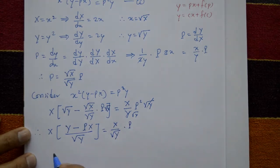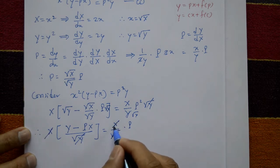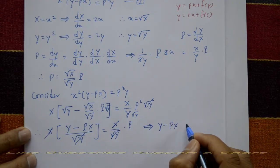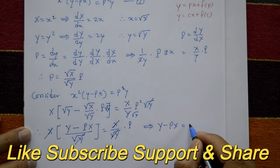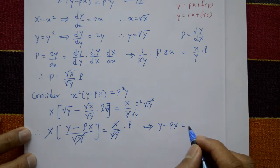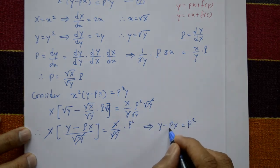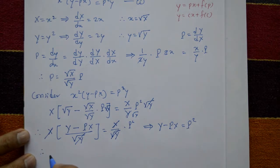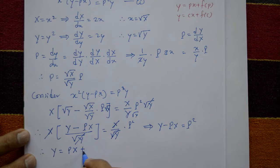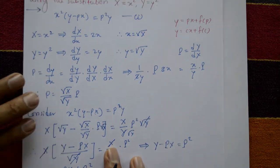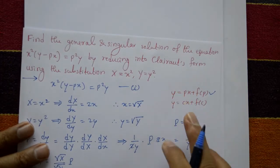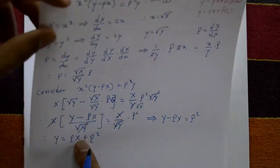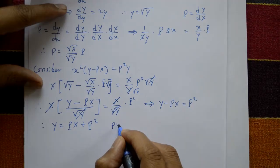After cancelling root Y on both sides and cancelling X, we get capital Y minus capital P times capital X equals capital P squared. Rearranging: capital Y equals capital P times capital X plus capital P squared. This is the general form of the Clairaut equation in capital letters. Now put capital P equal to c.